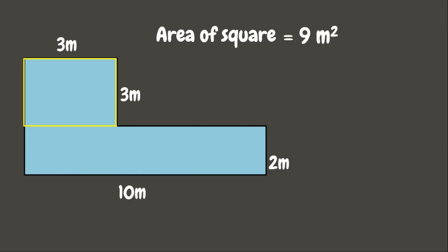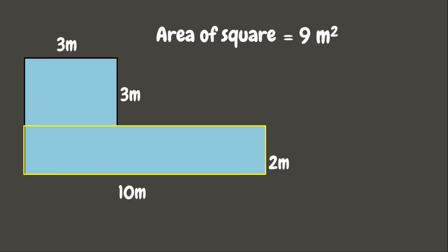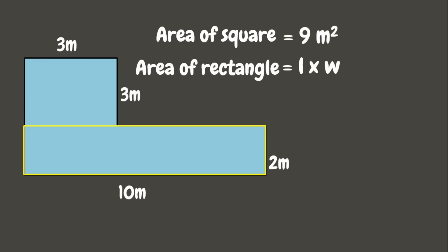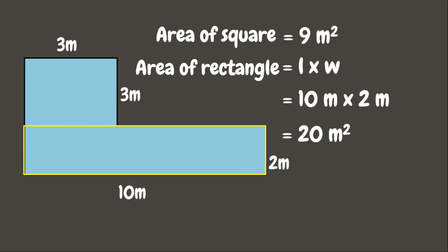Next, let's get the area of the rectangle. The formula for the area of the rectangle is length times width. Here the length is 10 meters and the width is 2 meters. So 10 meters times 2 meters equals 20 square meters — that is the area of the rectangle.